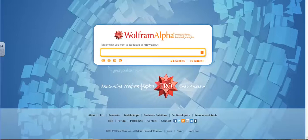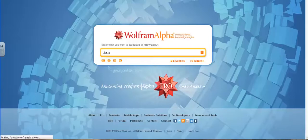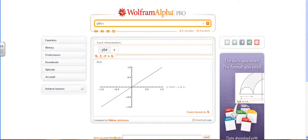The first one is the identity function, f of x is equal to x. To plot that, simply type plot x and Wolfram Alpha returns the plot of this function.